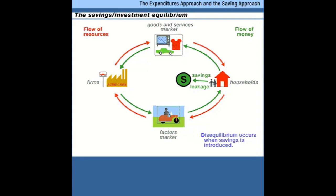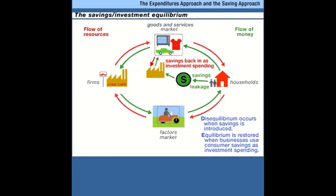If businesses acquire savings and use them to buy stuff that consumers aren't buying, that can restore balance to the circular flow. Savings are a leakage out of the circular flow, but business investment spending is an injection back in. Investment spending balances the reduction in consumption that created the savings. So if there's 10 worth of savings and business spending equals 10, the circular flow balances again. The stuff consumers don't buy — when they divert income into savings — is purchased by businesses who borrow that savings to acquire plant, equipment, and other capital goods. In equilibrium, savings has to equal investment.